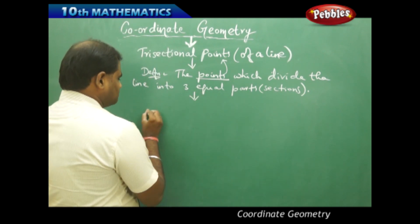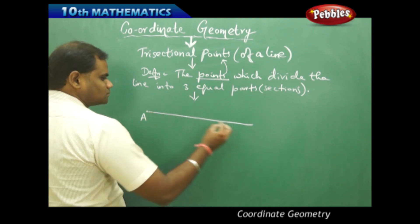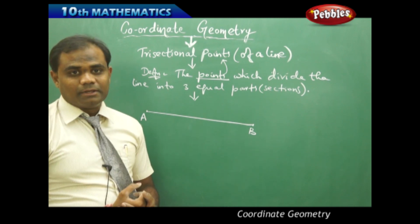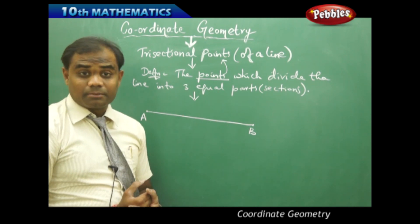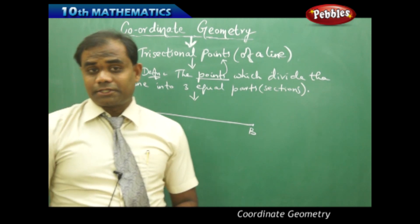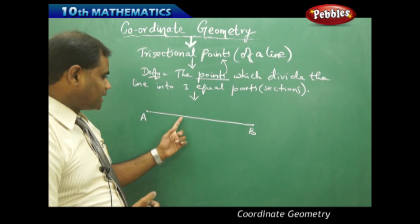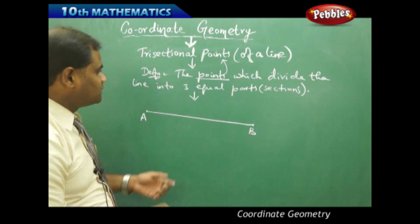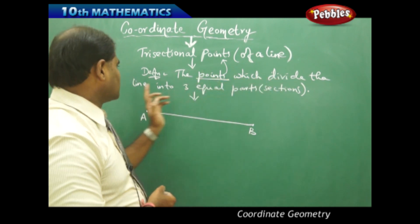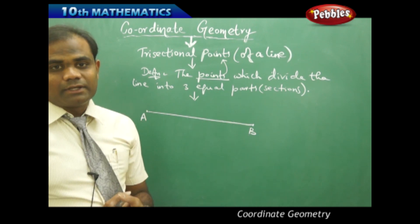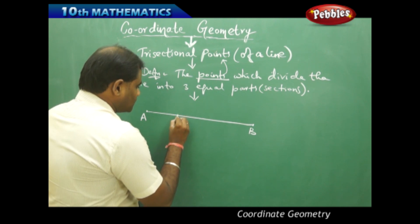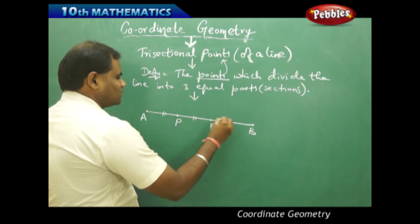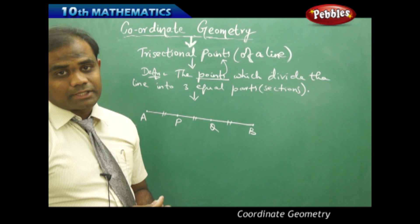Say for example, I take a line AB. What are the trisectional points of the line AB? Where do the points lie in between is the biggest question when we define the trisectional points. The points which divide the given line AB into three equal parts — if I take two points P and Q on AB such that all three segments are equal, then P and Q are trisectional points.